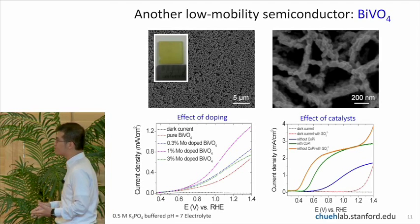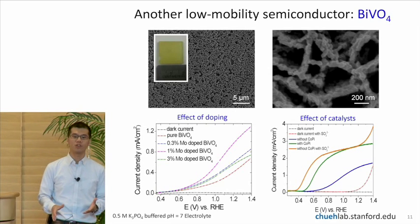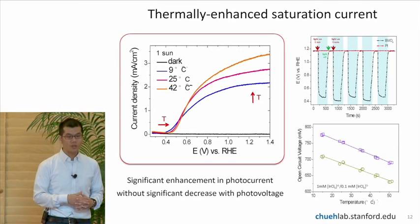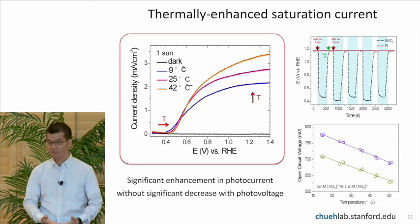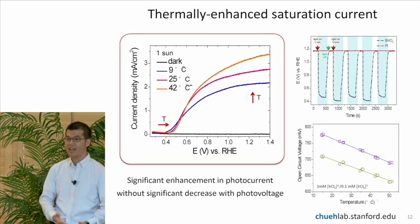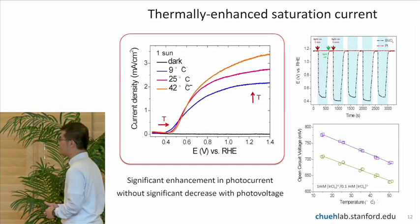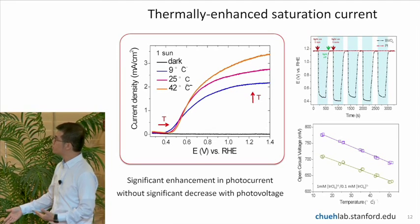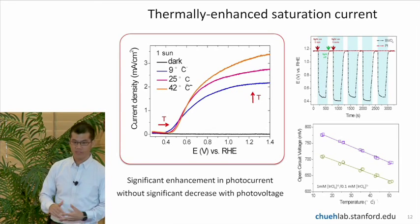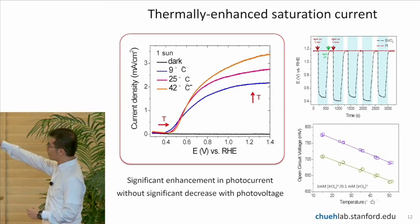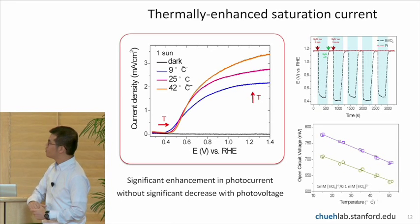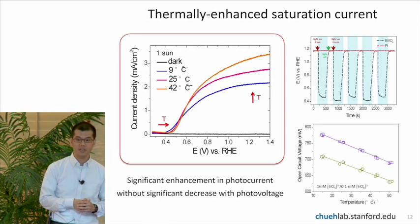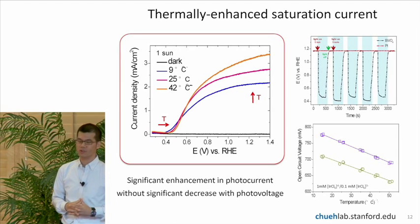So the next thing we wanted to do was to see how thermal energy could improve the performance of the material. Well, we saw actually an even more dramatic dependence on temperature than iron oxide. In the case of bismuth vanadate, when we increase the temperature, the current under illumination versus voltage rises significantly with temperature. If you take a look at the higher voltage part, you can see that the current actually increases by almost 50% as we go from 9 degrees Celsius to just 42 degrees Celsius. Just a very small temperature increase.